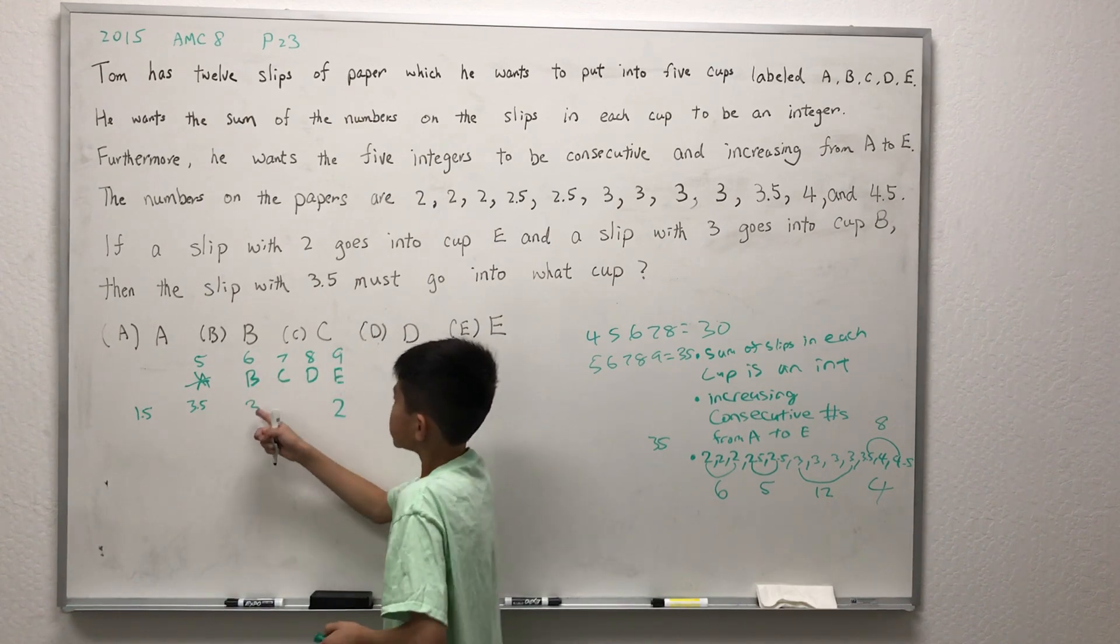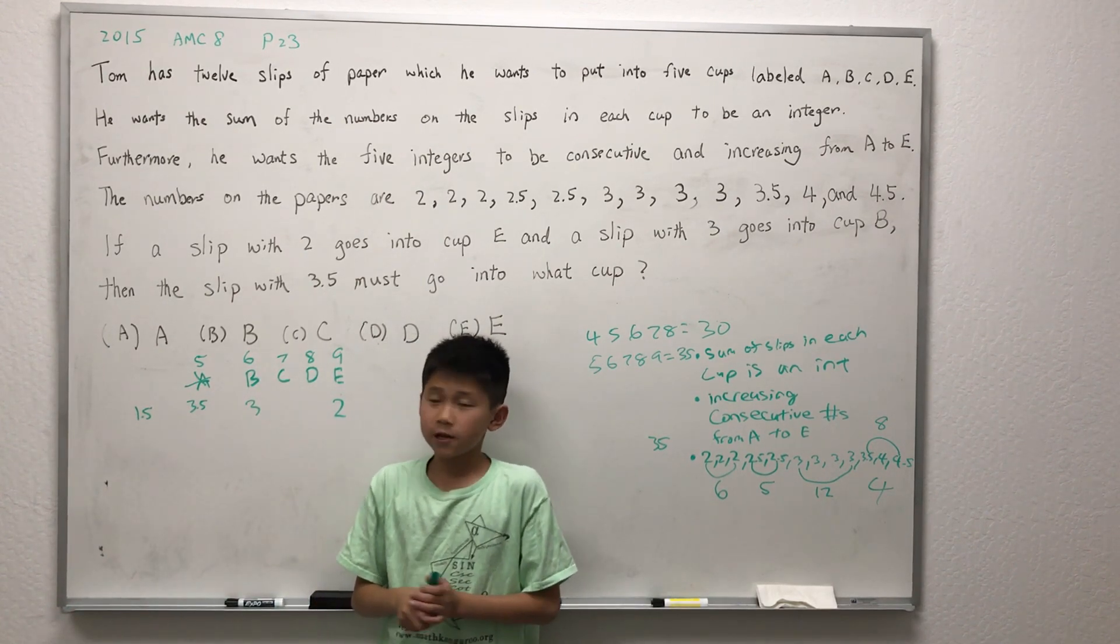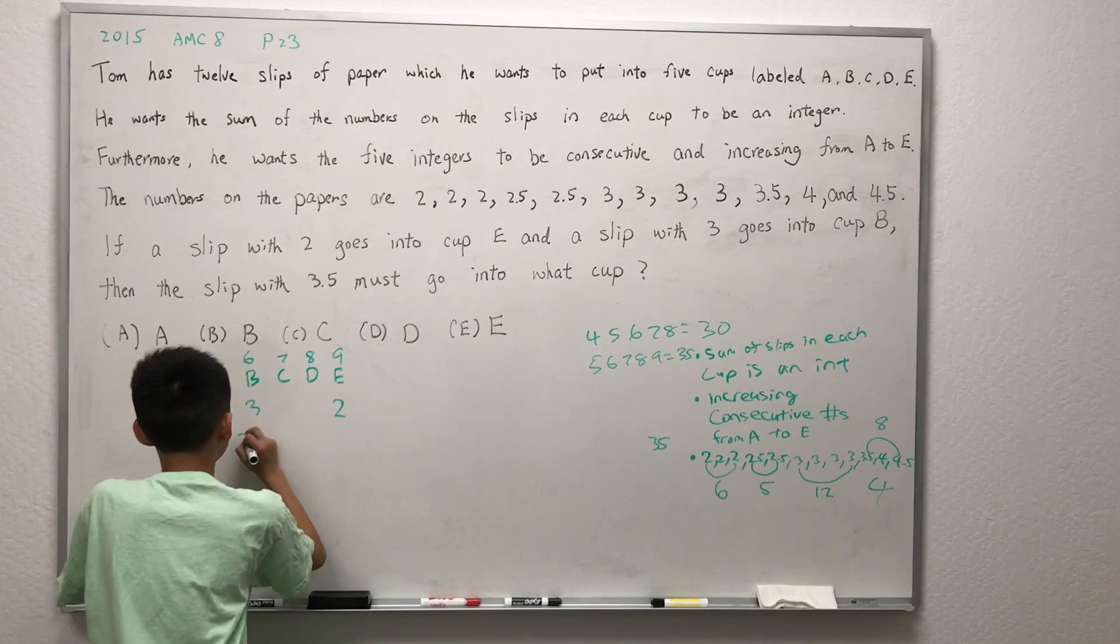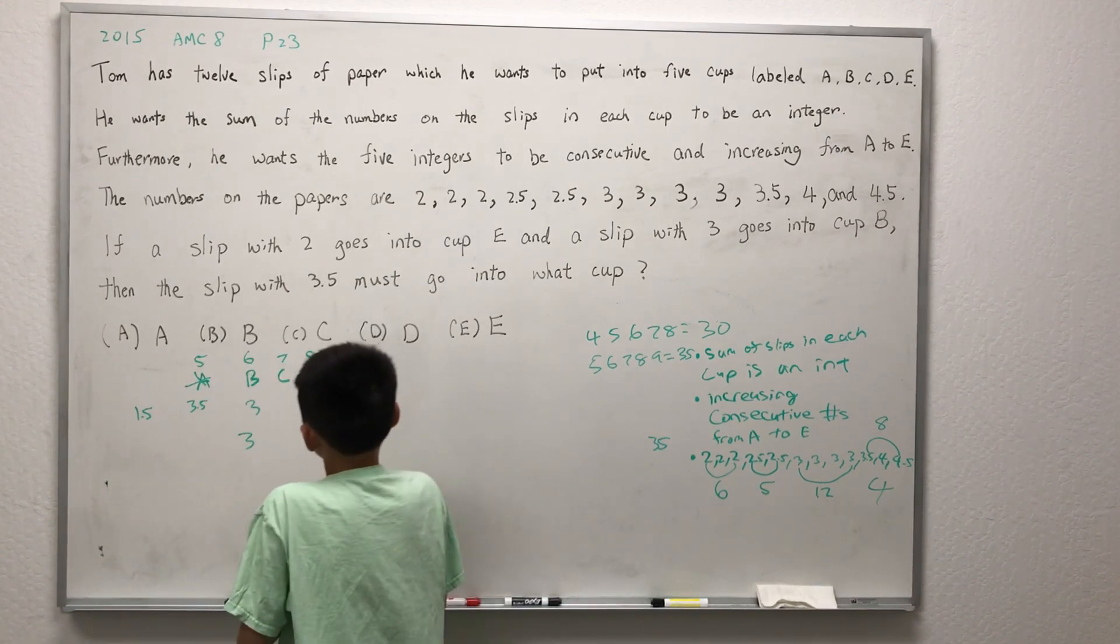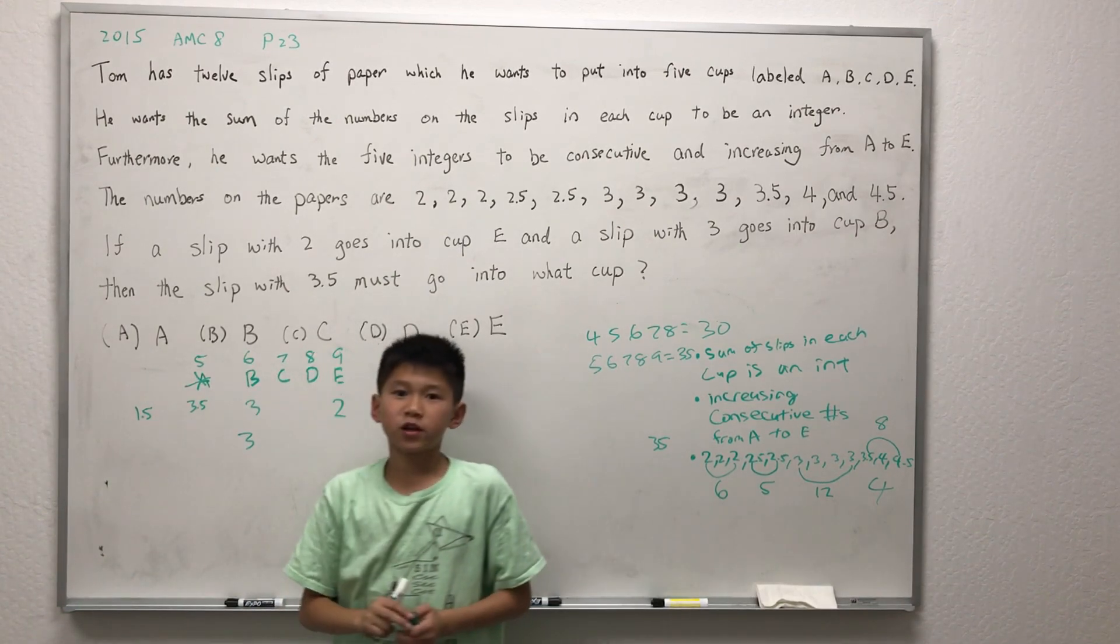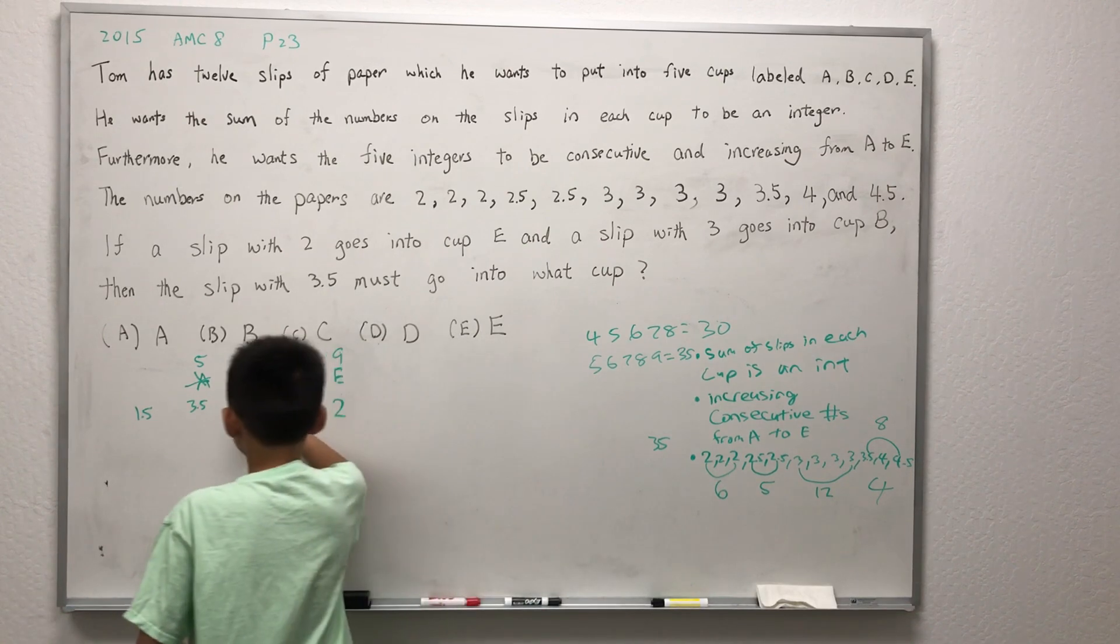Let's try B. Since there's already a slip of 3 in B, that means there's 3 remaining. Since 3.5 is bigger than 3, option B is out.